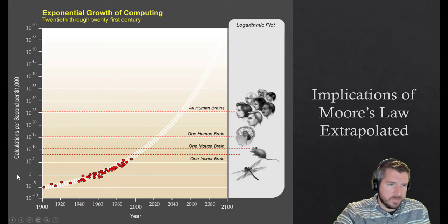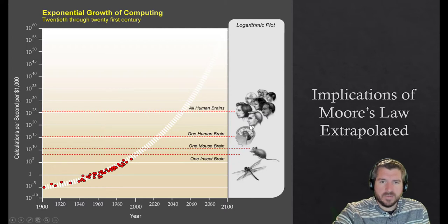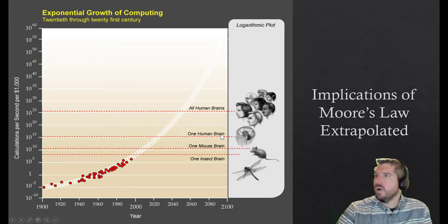We still have the calculations per second per $1,000. But then we're going to put some other things on the scale on the right-hand side. These are just estimates, but the idea is that one insect brain could do this many calculations per second. And then one mouse brain, one human brain, and that's my kid, but that's okay.